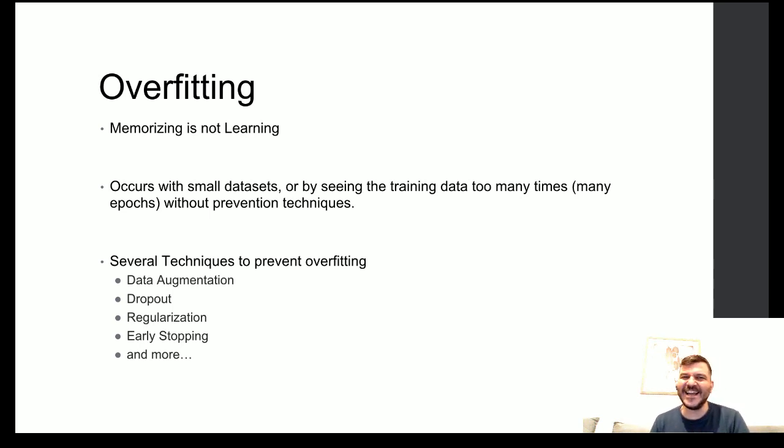Overfitting is the line that separates learning from memorizing when it comes to training neural networks. And unfortunately, this is a very common problem. It occurs when you do not have enough data or if you keep looping over and over the same data again and again.